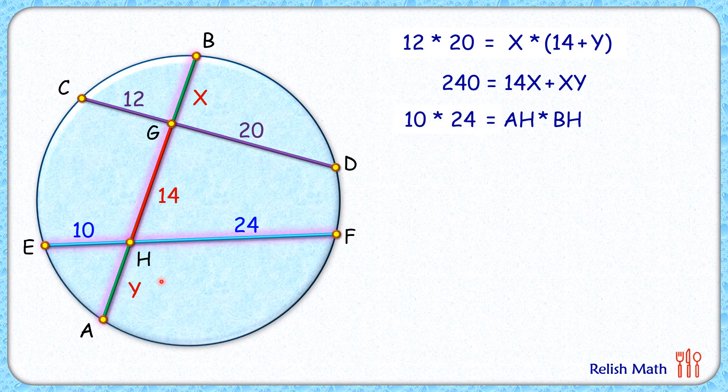AH is y, and BH is 14 plus x. So putting these values here, now solving it, LHS will become 240 and RHS is 14y plus xy. So we have got two equations, two variables.